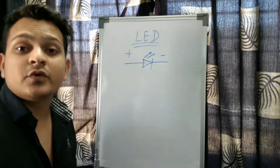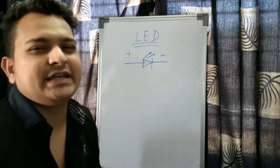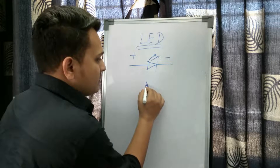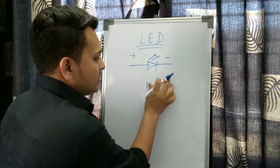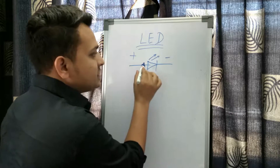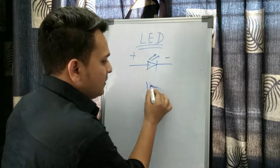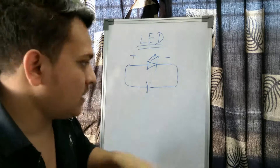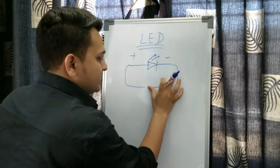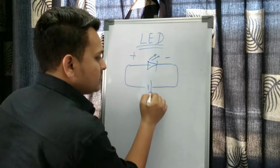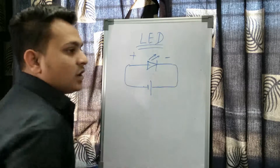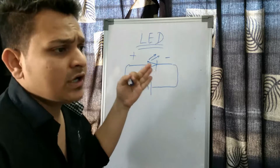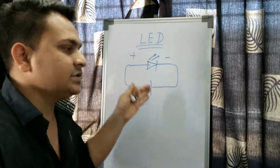The diode works in two ways: forward bias and reverse bias. If you apply positive to the anode and negative to the cathode, the LED will glow. But if you reverse the battery polarity — positive to negative — this is reverse bias and it will not work; it acts like an open circuit.